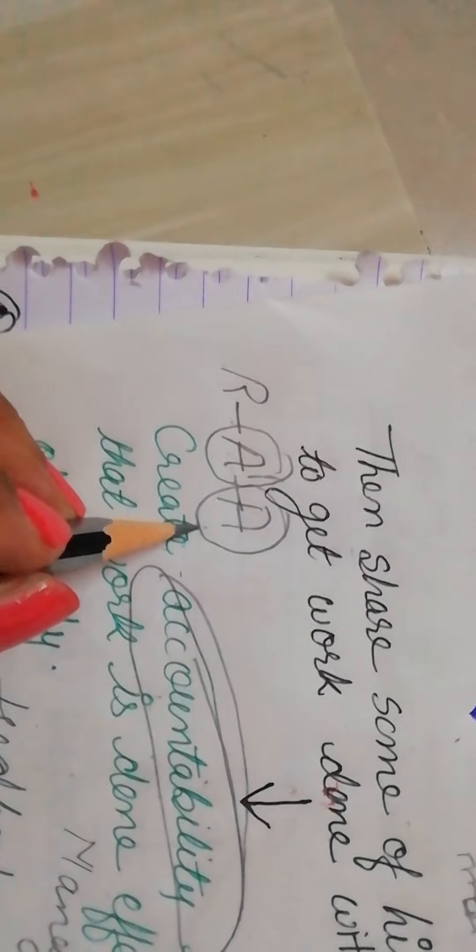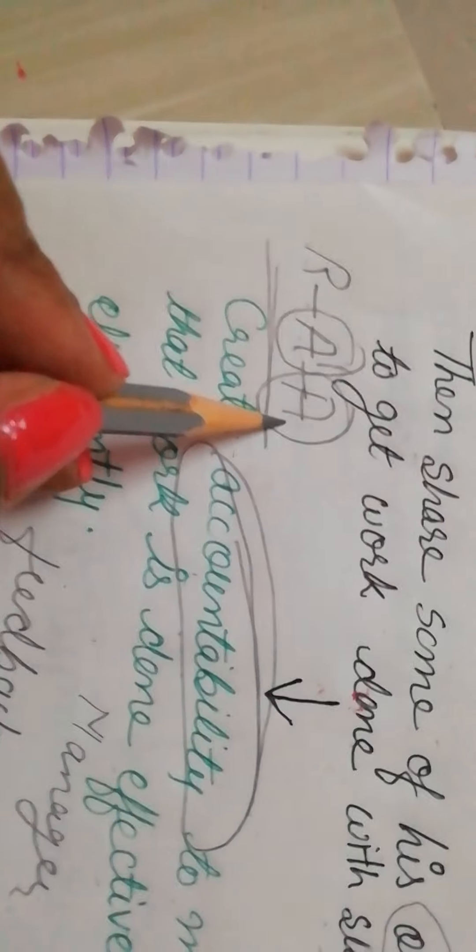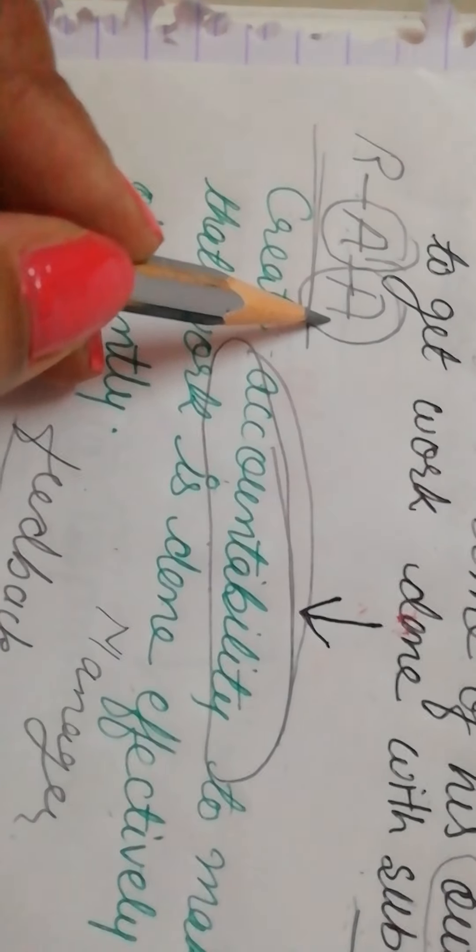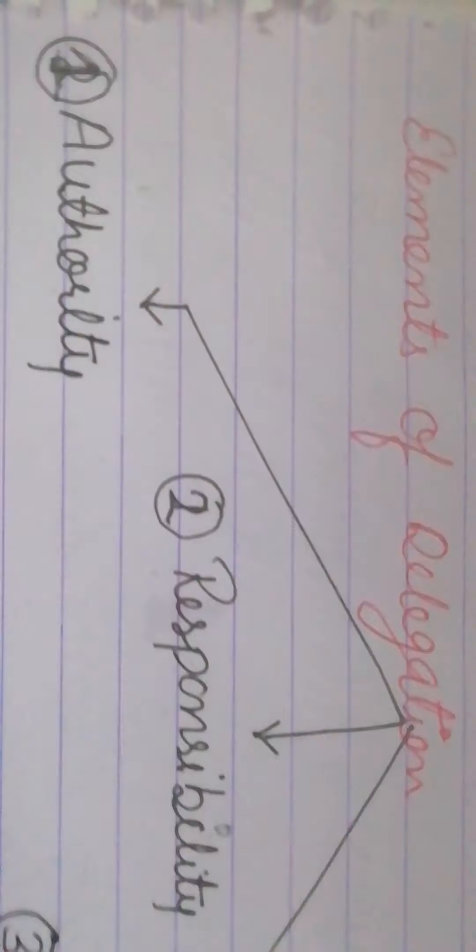So that is the flow: first the manager transfers responsibility, then transfers a little bit of authority, and then takes back accountability. Responsibility means division of work; authority means transfer of power; and accountability means the feedback given by the subordinate to the superior. These three — responsibility, authority, and accountability — are the elements of delegation, which we will learn in the next video.